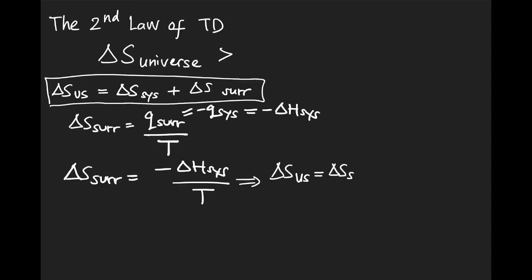So we can write it down as delta S of the universe equals delta S of the system minus delta H of the system divided by the temperature, normally in Kelvin. And this will be spontaneous if the entire delta S of the universe is bigger than zero.